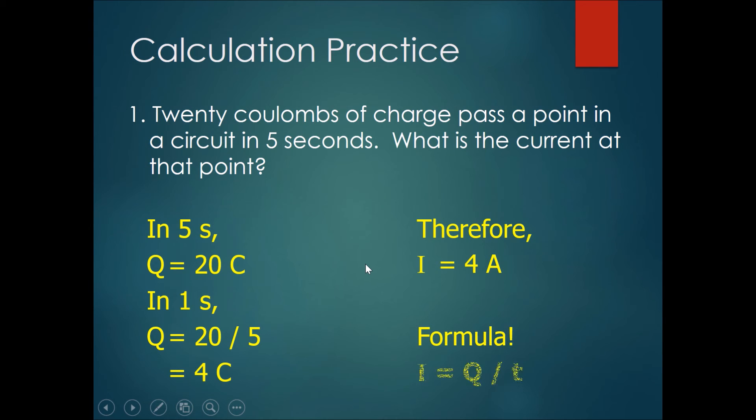Use the formula that we learned as well which is I equals Q over T. Current equals the total charge that passes through Q divided by the total time that it took to pass through that point T.